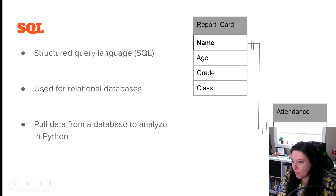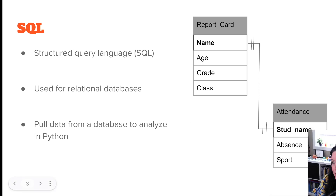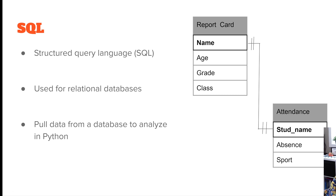Before we get to Python and Google Cloud, let's look at a very simple example. We have a report card table with columns: name, age, grade, class, and then an attendance table with: student name, absences, and sport. At the top of this entity relationship diagram you should see the primary key, which is 'name,' not the table name 'report card.'